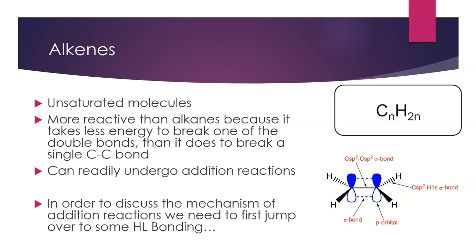So we know with alkenes that they are unsaturated molecules. They're more reactive than alkanes because it takes less energy to break one of the double bonds. So the single bond stays intact, but we can break that double bond and have addition across the double bond. So in order for us to discuss the mechanism of addition reactions to this double bond, we need to look at sigma and pi bonding within alkenes.